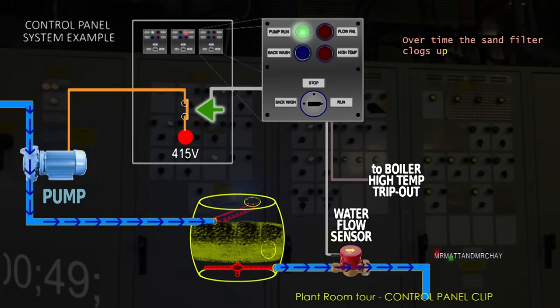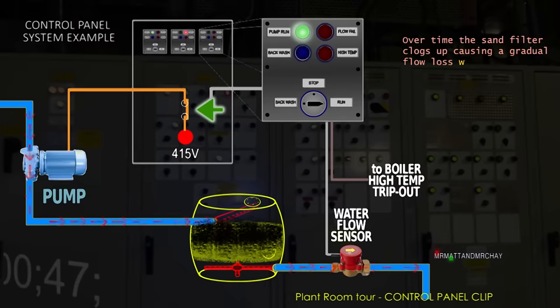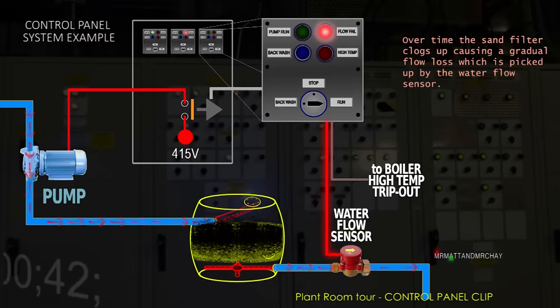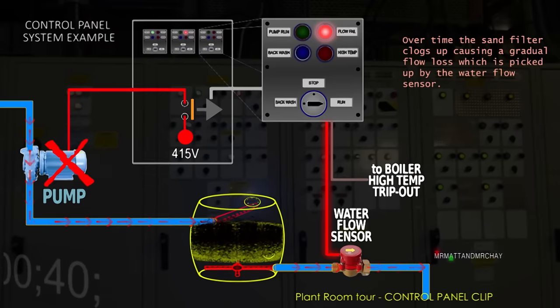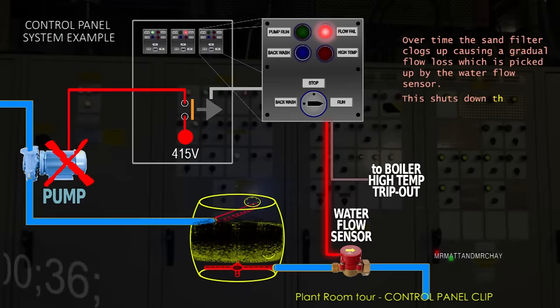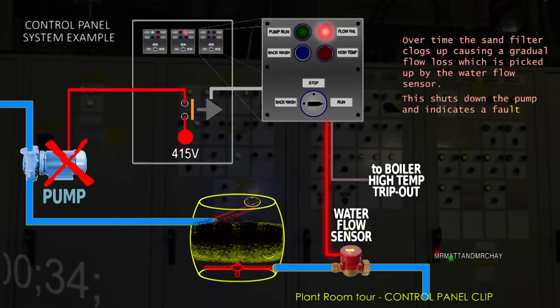Over time the sand filter clogs up with dirt particles in the water, which causes a gradual flow loss. This is picked up by the water flow sensor, which now signals a fault to the control panel. Inside the cabinet the motor is shut down and shows a fault on the panel.